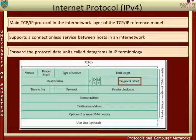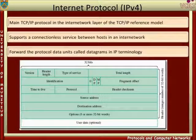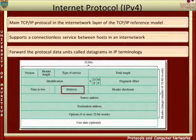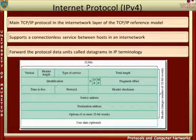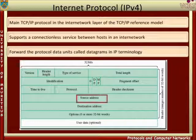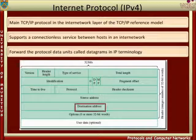DF is the don't fragment flag, which indicates that a datagram should not be fragmented. MF is the more fragments flag, which indicates that a datagram is not the last fragment. Fragment offset indicates where the fragment belongs when measured in multiples of 8 bytes; the first fragment has an offset of 0. Time to live gives a way of indicating how long a datagram should exist in an internetwork.